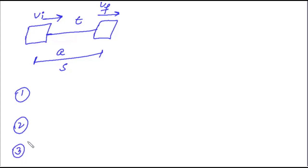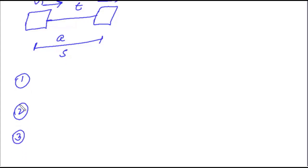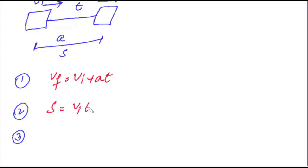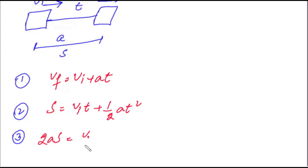Let's look at what these three equations say. First equation: vf = vi + at. Second equation: s = vi·t + ½at². Third equation: 2as = vf² − vi². These are the three equations of motion you have already seen in school physics.